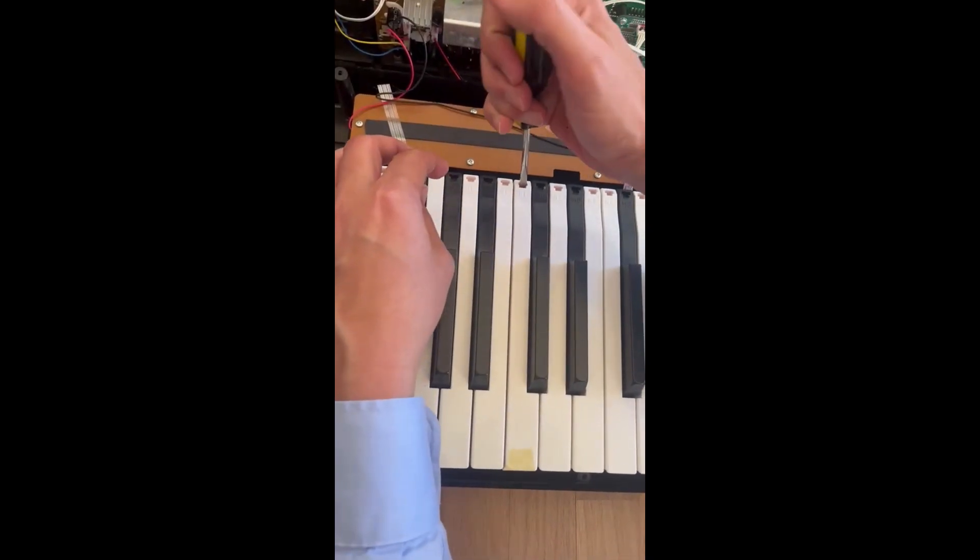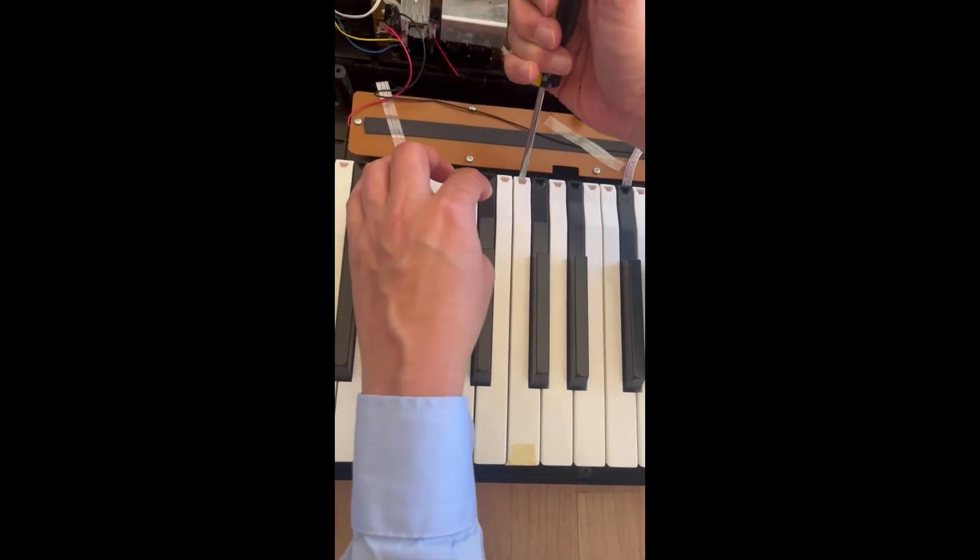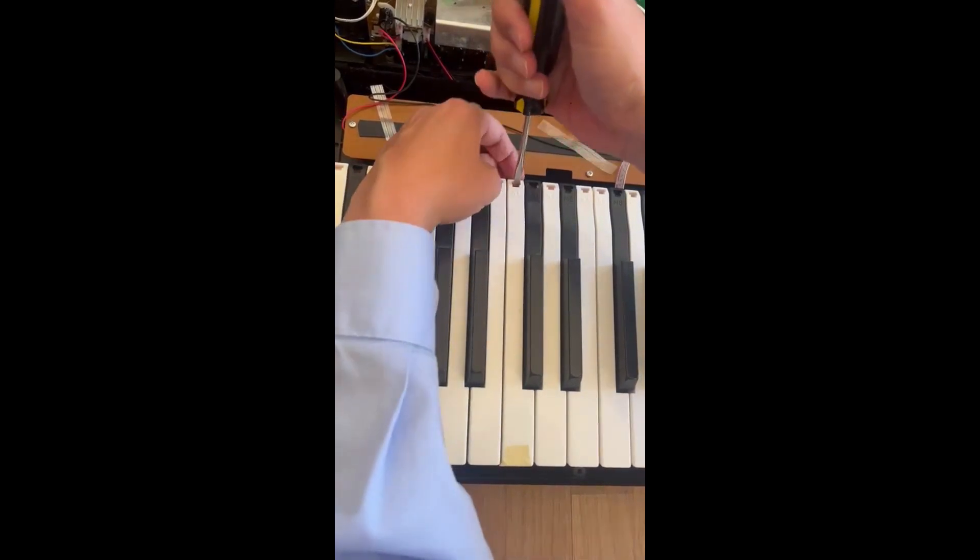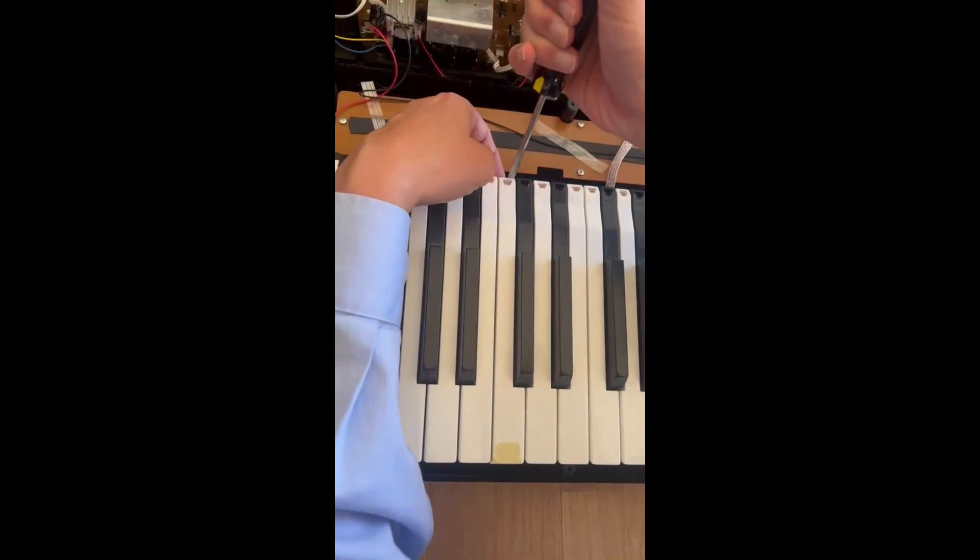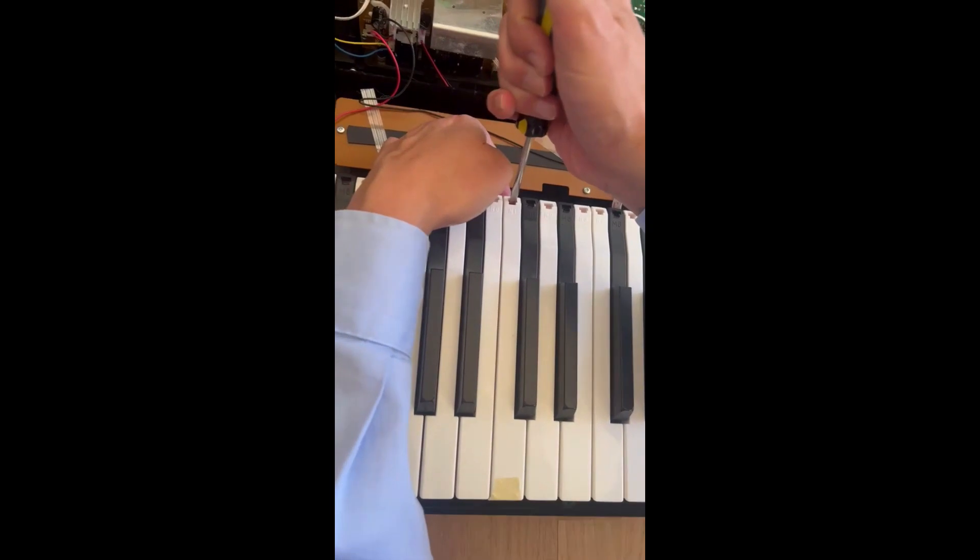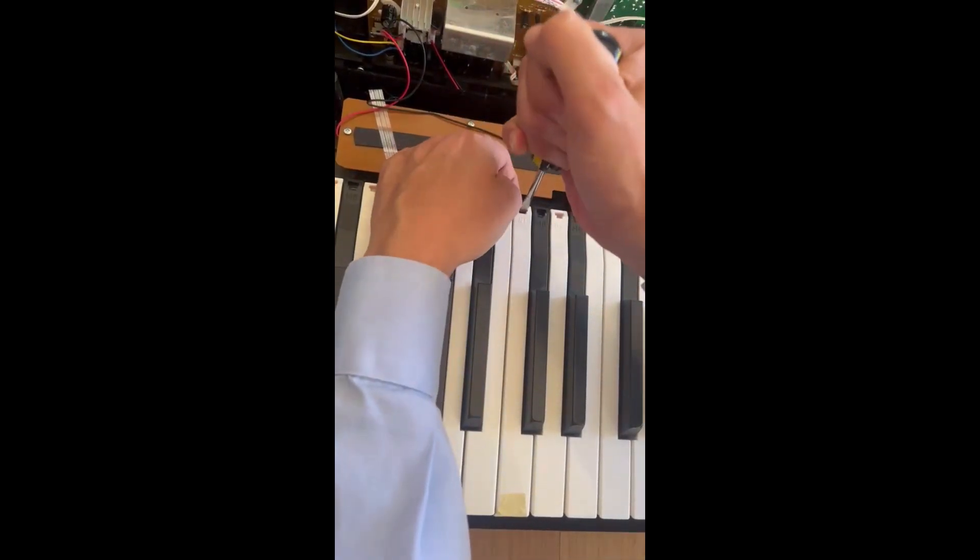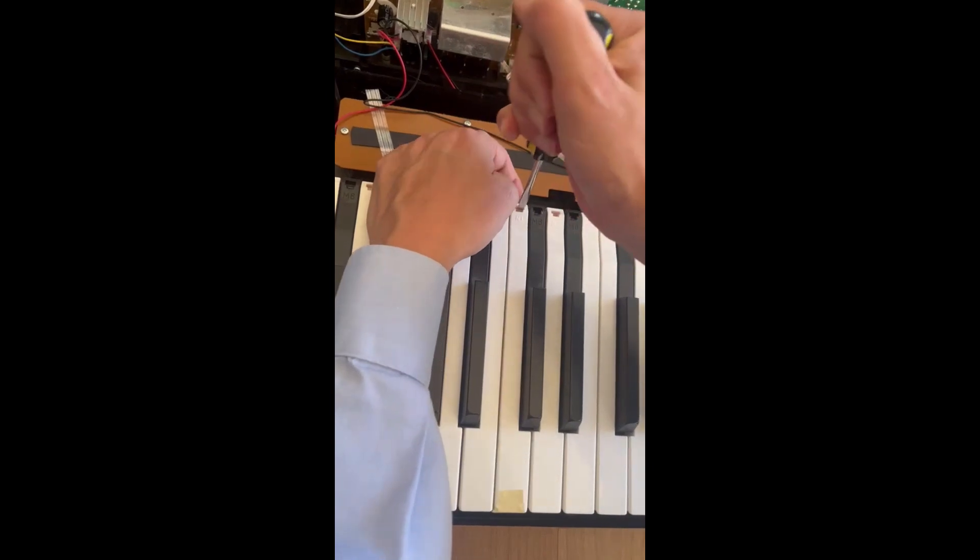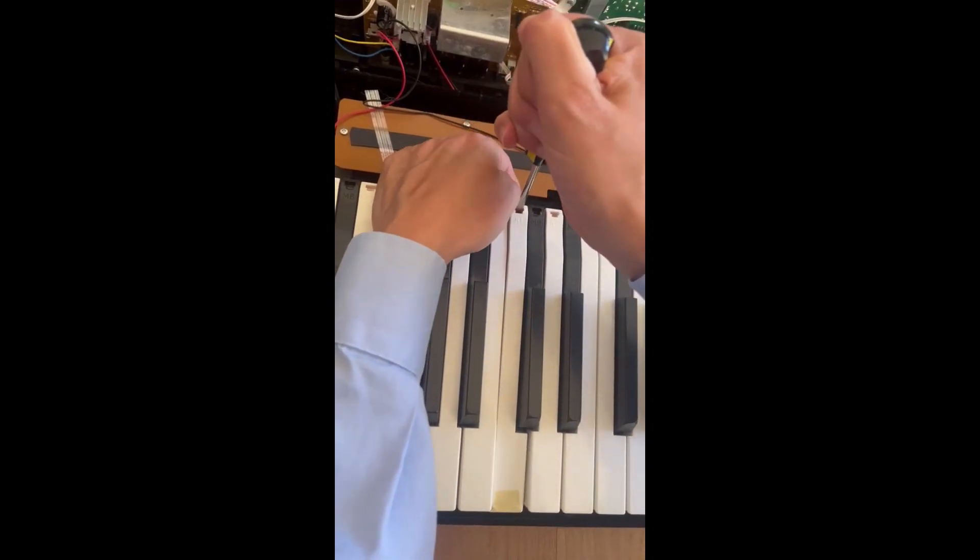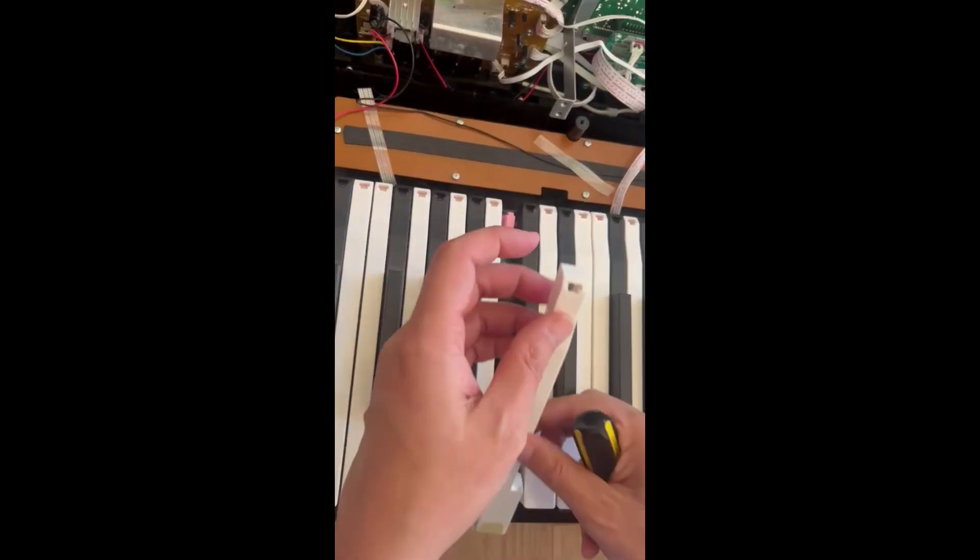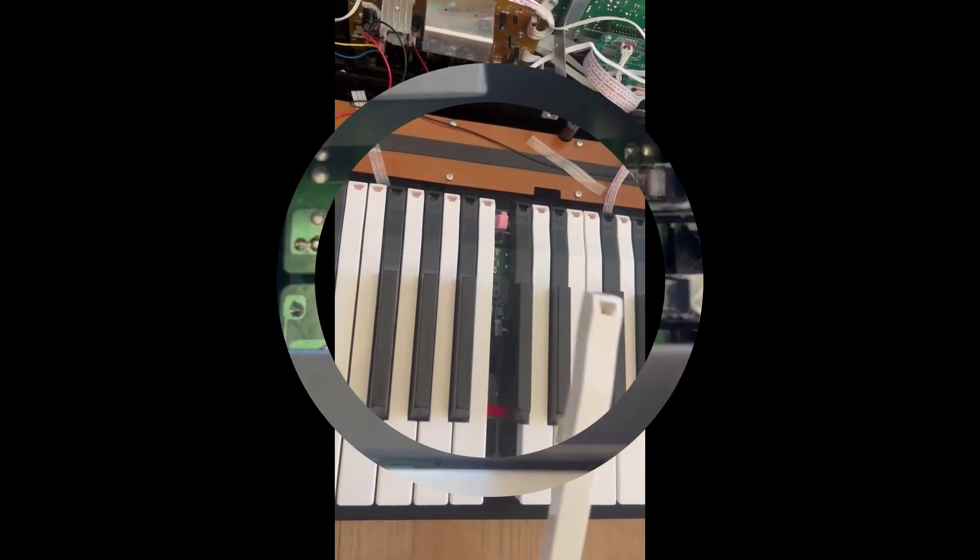In order to get the piano key off, there's a pink tab in the back and you'll want to use a screwdriver to press against the tab and then the key should pop off. To put it back will just be in reverse.